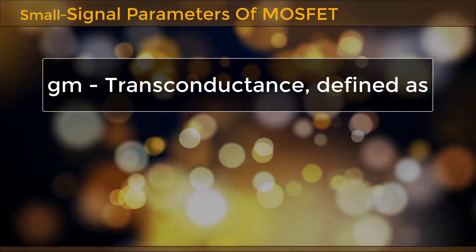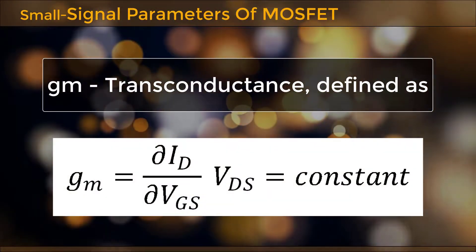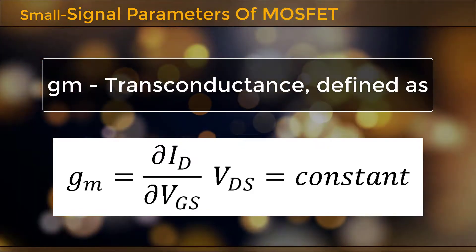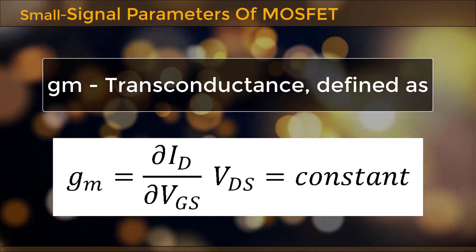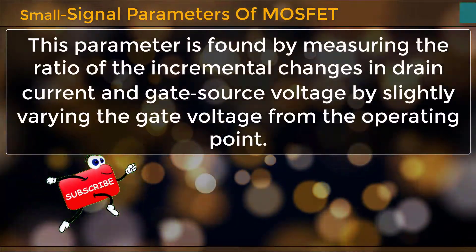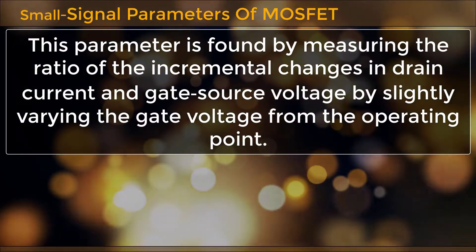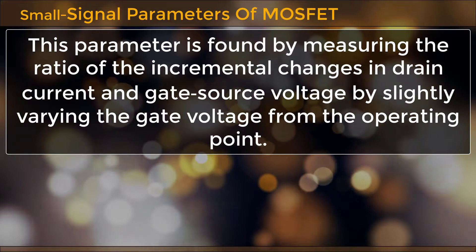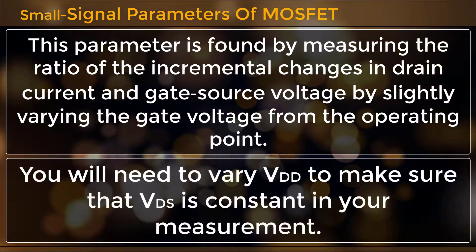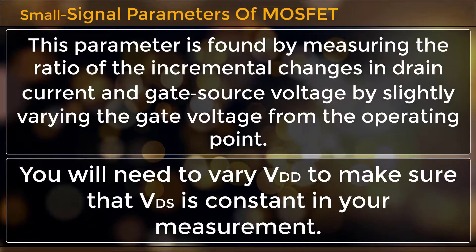GM is transconductance, defined as GM equals delta ID divided by delta VGS where VDS is constant. This parameter is found by measuring the ratio of the incremental changes in drain current and gate-source voltage by slightly varying the gate voltage from the operating point. You will need to vary VDD to make sure that VDS is constant in your measurement.